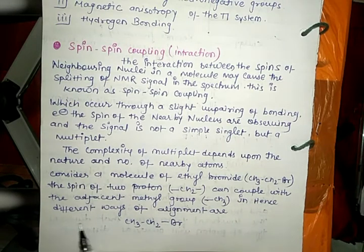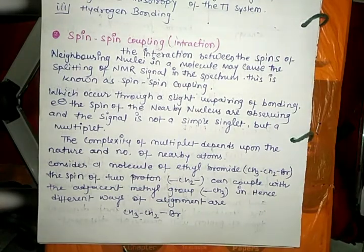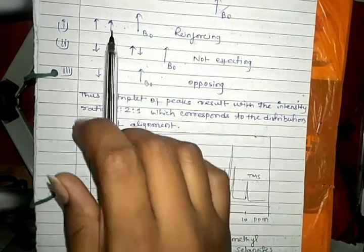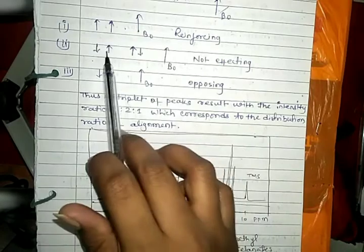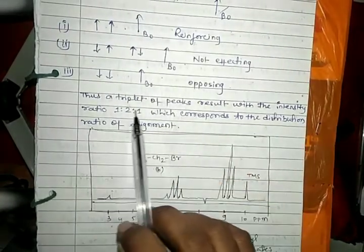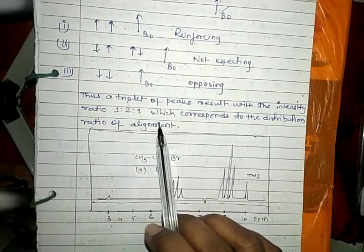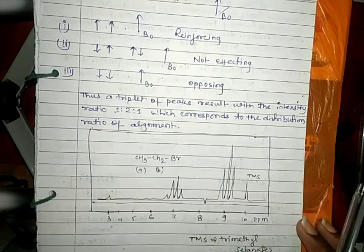The spin of two protons CH2 can couple with the adjacent methyl group in different ways of alignment. There is reinforcing, no effect, and opposing. Thus a triplet of peaks result with the intensity ratio 1:2:1, which corresponds to the distribution ratio of alignment.